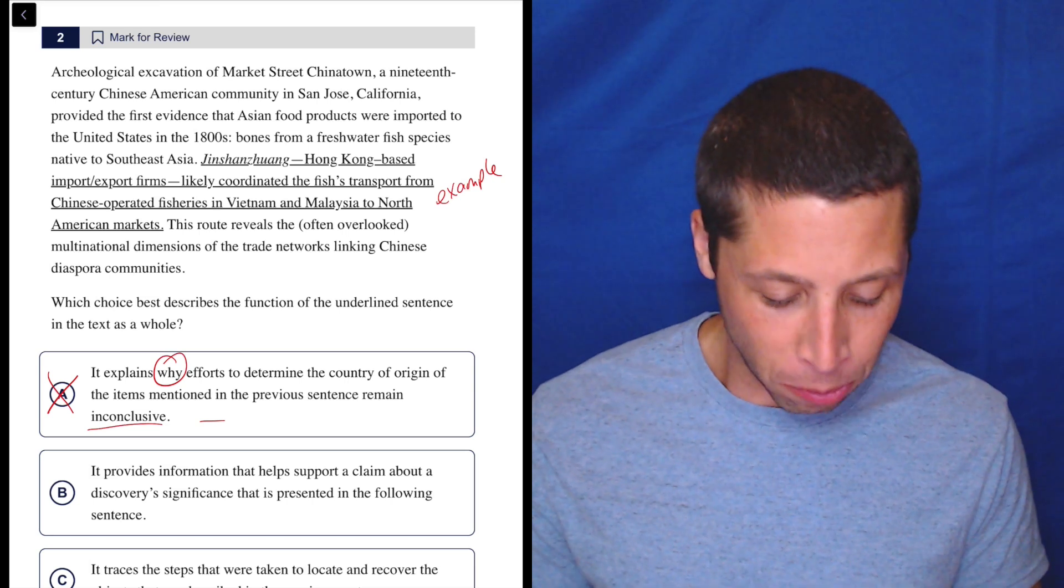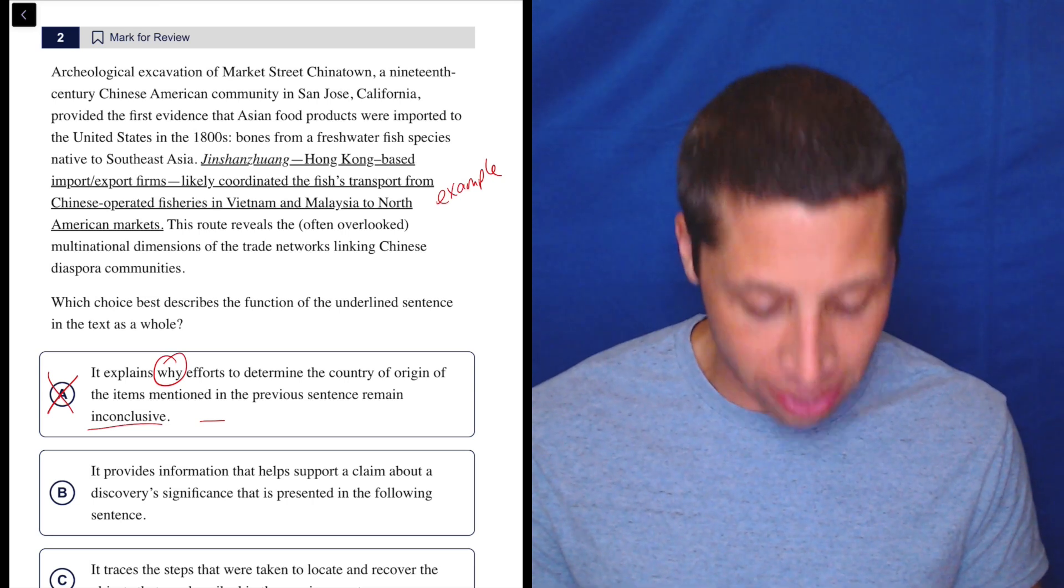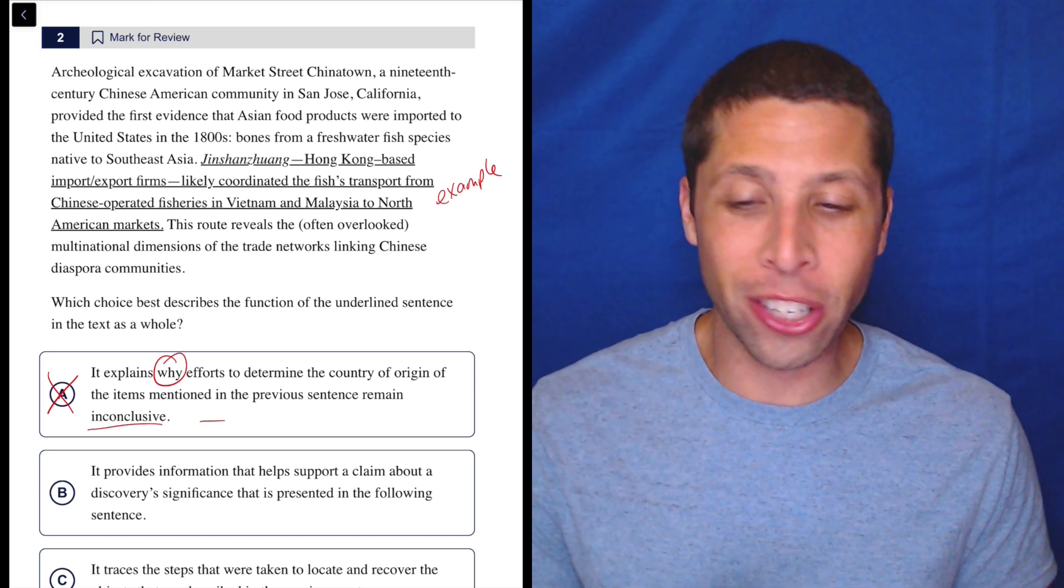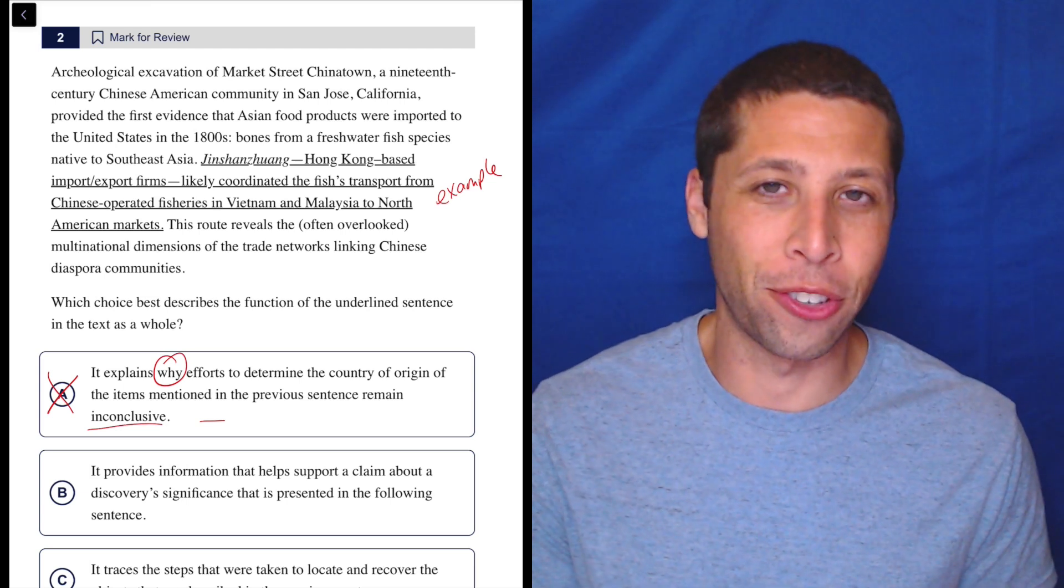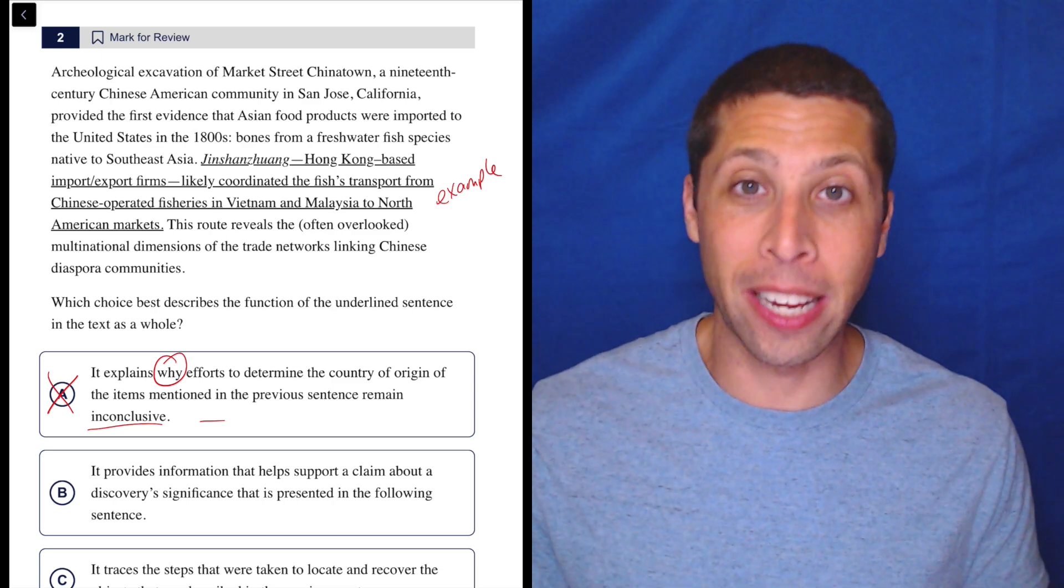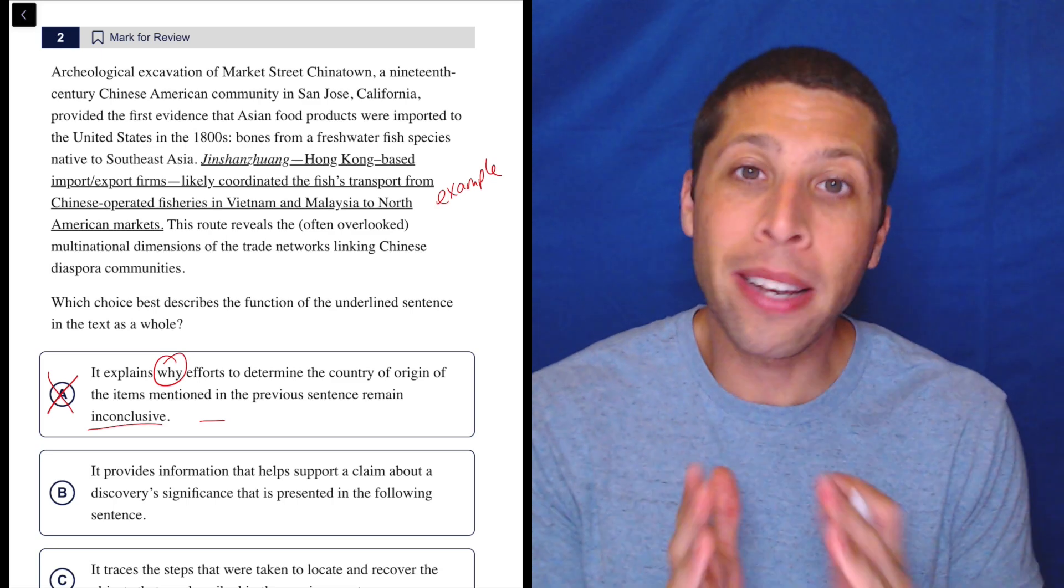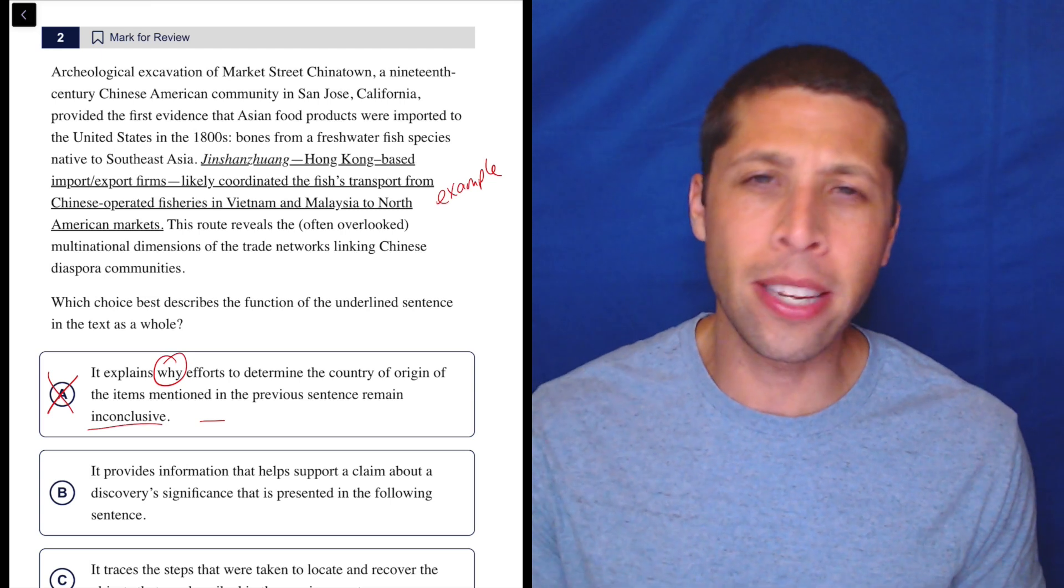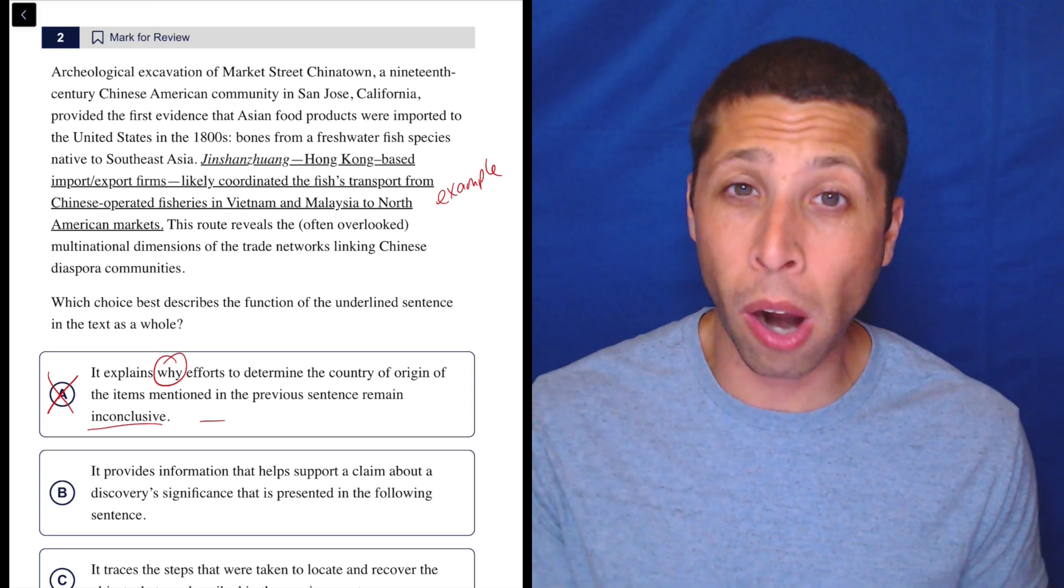It provides information that helps support a claim about a discovery's significance that is presented in the following sentence. Notice how vague that answer is, right? It doesn't mention anything about what's going on in the passage at all. Some of you are going to be turned off by that choice because it's not saying anything about the fish or whatever. That doesn't necessarily mean it's bad.